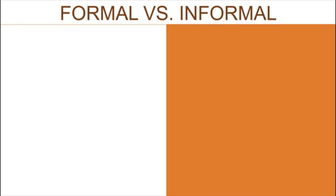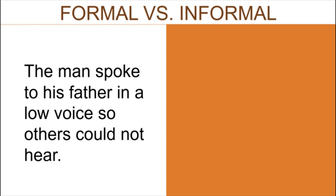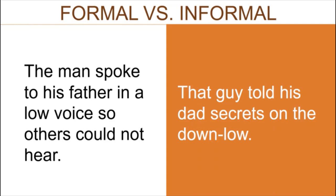Let's see an example of both formal and informal diction to compare the two. For formal diction: 'The man spoke to his father in a low voice so others could not hear.' It uses more polite words and you can already sense the formality. Informal: 'That guy told his dad secrets on the down low.' Down low means discreet. Just look at how different the words are — formal used 'man' instead of 'guy,' 'father' instead of 'dad,' 'low voice' instead of 'down low.' Also notice that the formal example is longer because formal diction tends to use longer sentences with more polite and proper words.